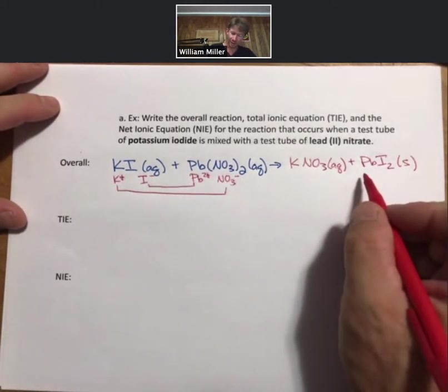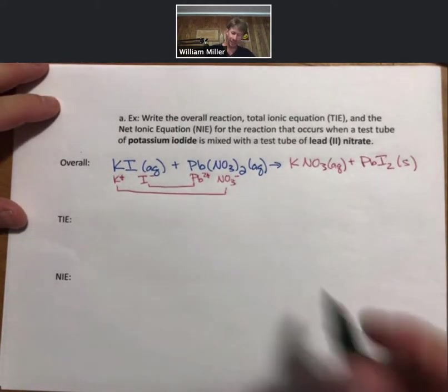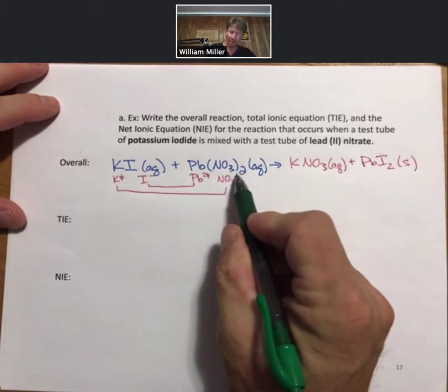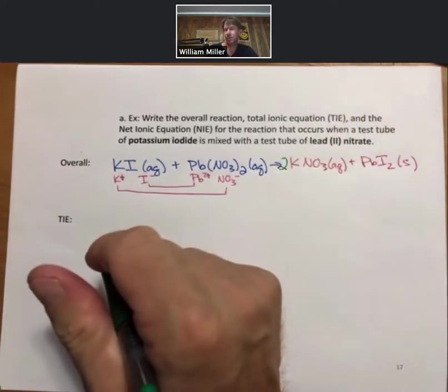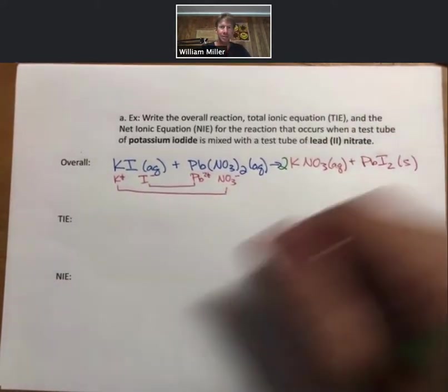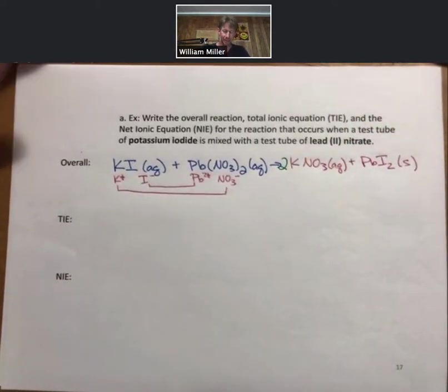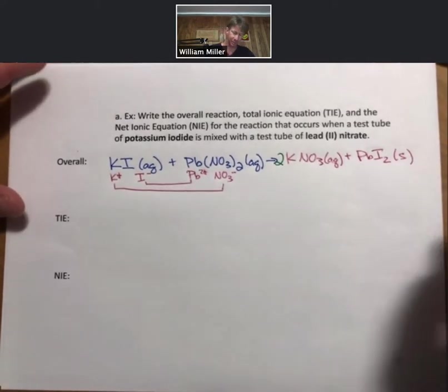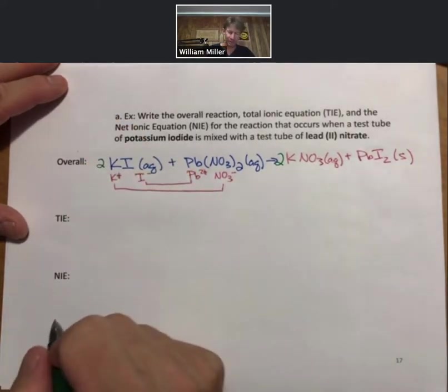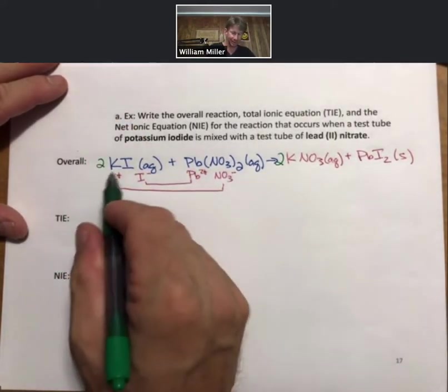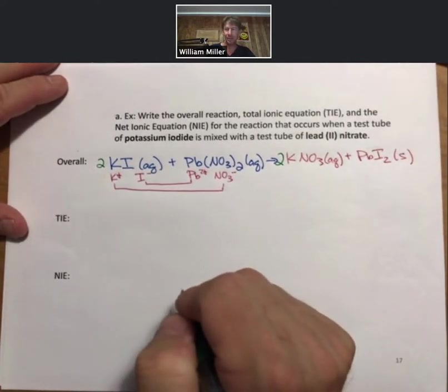This is the overall reaction. It's not balanced yet. I can see that I have two nitrates here, but only one nitrate on the product side. Without going through all my rules for balancing reactions, I'm going to just balance it visually, and then see if I can get it that way. I always have the fallback plan of going to my rules. Now I have two potassiums. I need two potassiums on the reactant side, and that gives me two iodides, and everything is balanced right there.